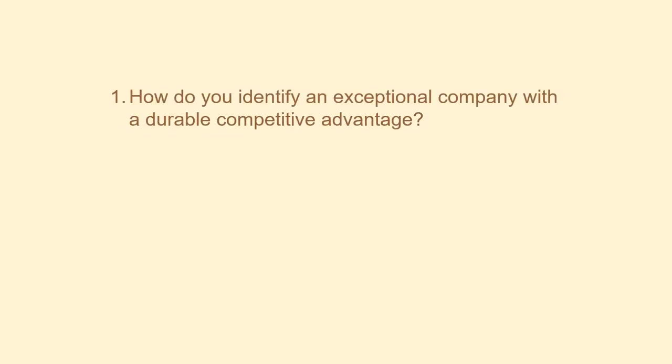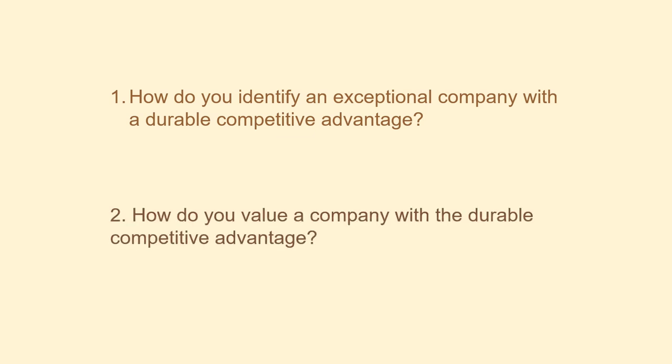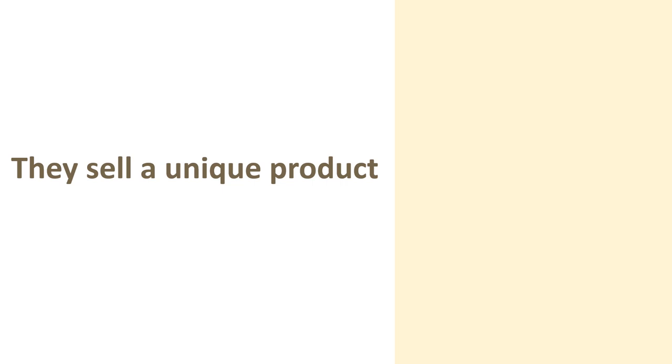At its heart, the Warren Buffett style of investing is about improving the methods of his mentor, Benjamin Graham. The two key themes that distinguish the style of investing from Benjamin Graham's are: one, how do you identify an exceptional company with a durable competitive advantage? And two, how do you value a company with a durable competitive advantage? These companies own a piece of the consumer's mind and therefore they do not have to change their products or service offerings. Warren Buffett developed a set of analytical tools to identify these special types of businesses.